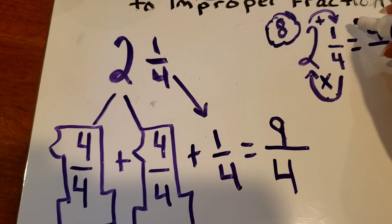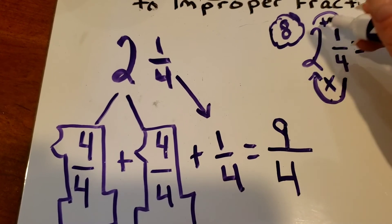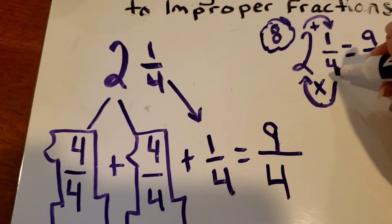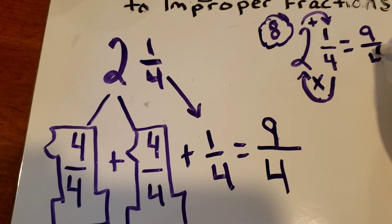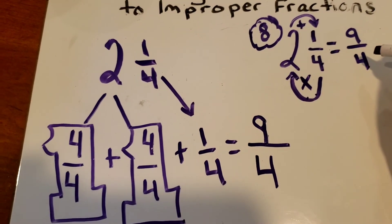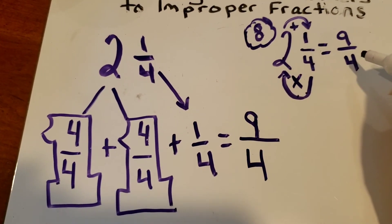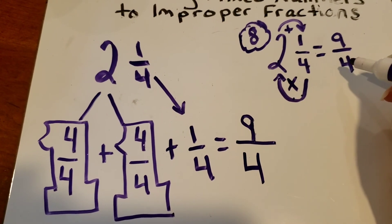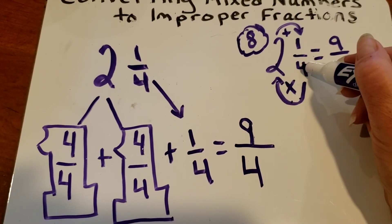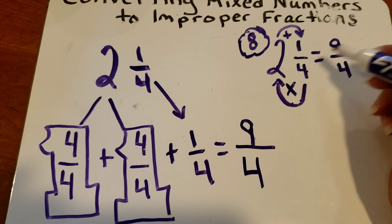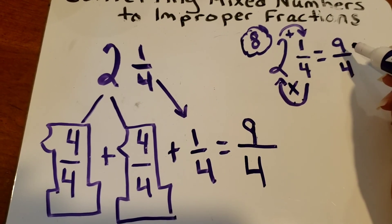Then I'm going to add my numerator. So four times two is eight, eight plus one is nine. So that's going to give me my new numerator of nine. The denominator is going to stay the same—we're not changing the amount the whole is broken up into, it's still broken up into four equal parts.